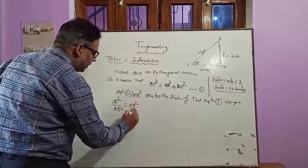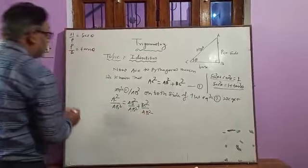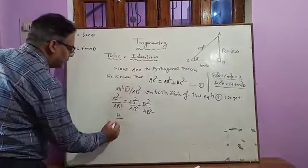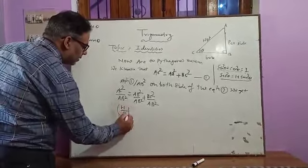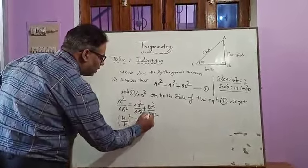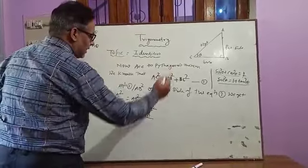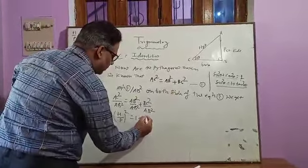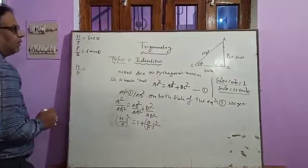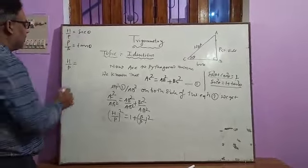We already know that AC is the hypotenuse and AB is the perpendicular side, so we get hypotenuse upon perpendicular, whole square. AB² cancels out, giving us 1. BC is the base, so we get base upon perpendicular, whole square. We know that perpendicular upon hypotenuse is sin θ, and the reciprocal of sin θ is cosec θ.